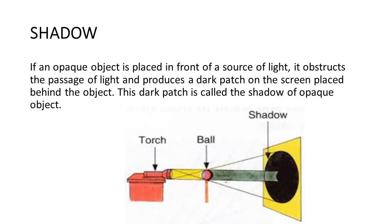Let's discuss what is a shadow and how is it formed. Shadow is a dark patch formed behind an opaque object when it blocks the path of light coming from a source of light.